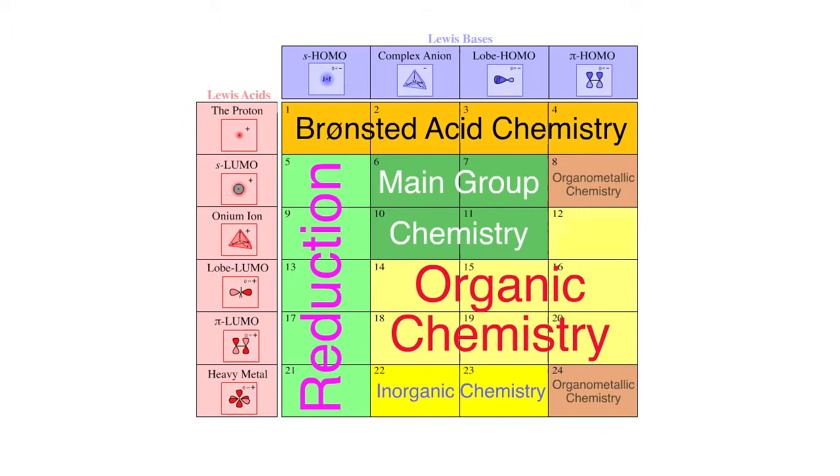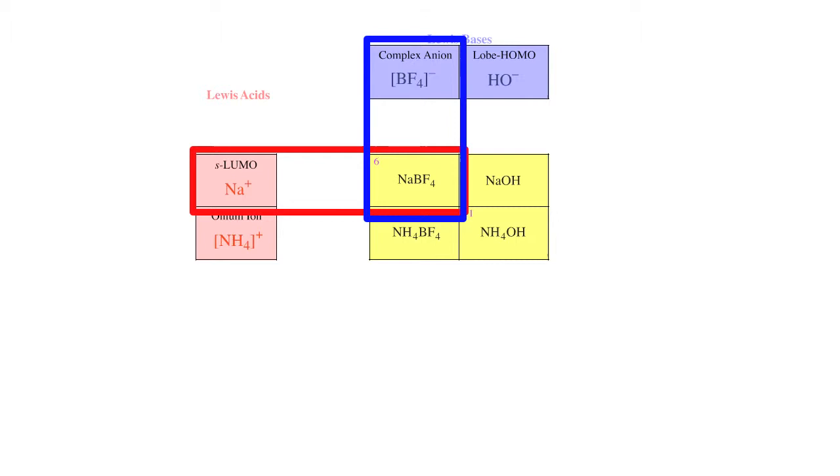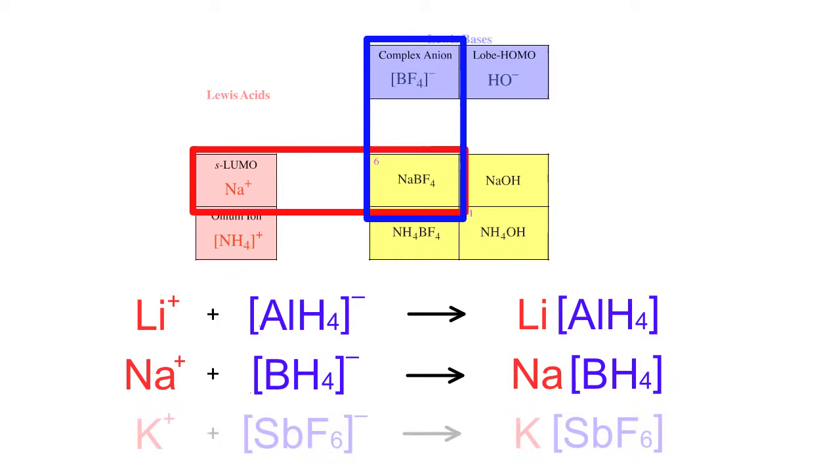Moving on now, we're going to have a look at some main group chemistry. First, S-LUMO Lewis acids plus complex anion Lewis bases. A classic example is lithium aluminum hydride, a complex of the S-LUMO Lewis acid Li+ ion and the tetrahydroaluminate ion AlH4- to give LiAlH4. Likewise sodium borohydride and potassium hexafluoroantimonate.